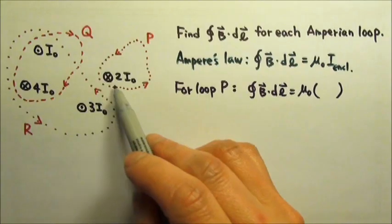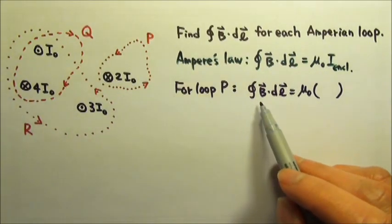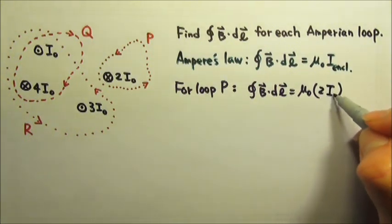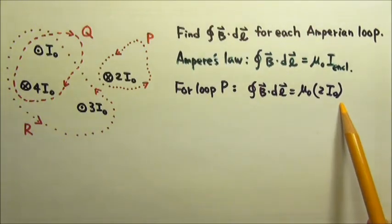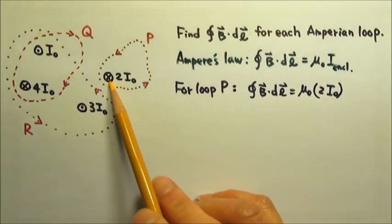For loop P, the enclosed current is 2I₀. So this integral would equal μ₀ times 2I₀. Except that there is one more thing we have to consider: it makes a difference whether this current goes into or out of the page.